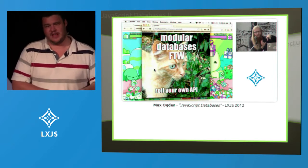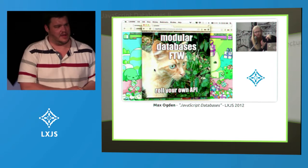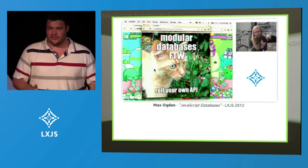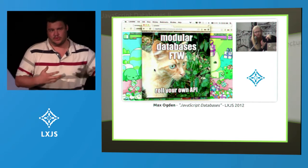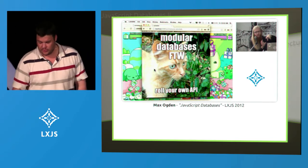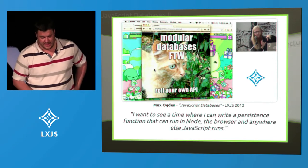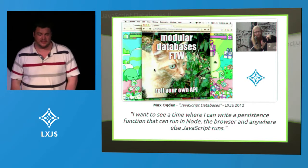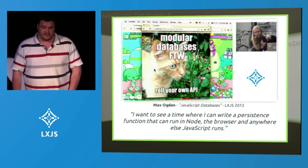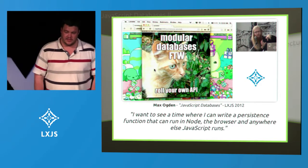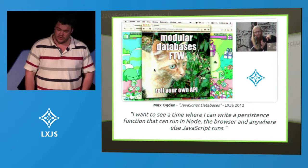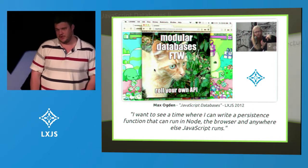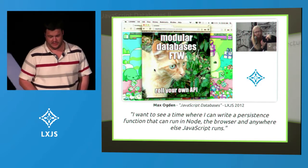So Max talked about JavaScript databases and basically outlined his dream for what we could do. And this is one of the things he said: 'I want to see a time where I can write a persistence function that can run in Node, the browser, and anywhere else that JavaScript runs.'